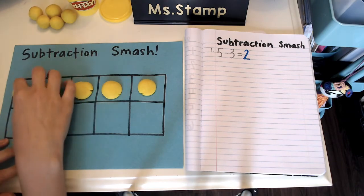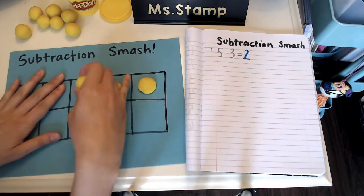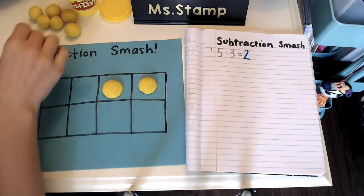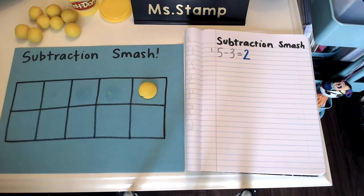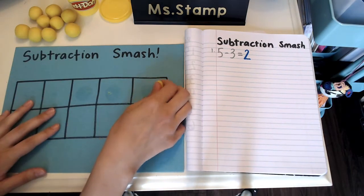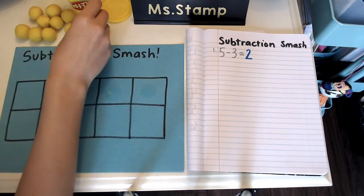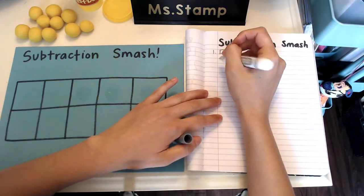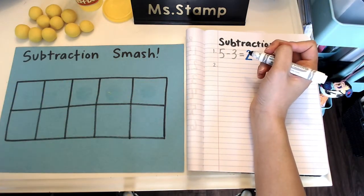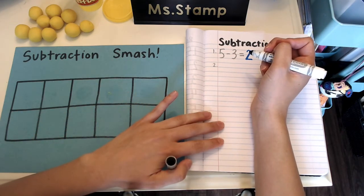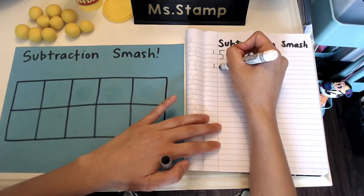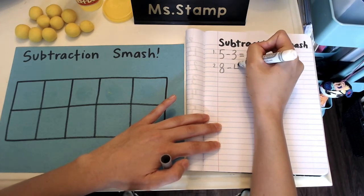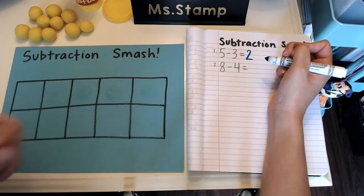So for the number two you curve around and slide to the right to make the numeral two. All right, I'm going to take these off, fix up these play-doh balls real quick and see what my next problem is. You just roll them in the palm of your hand to make them nice round balls. The next problem is number two: eight minus four. So I'm going to write the number two. I know this is my second math problem and it's eight minus four equals.